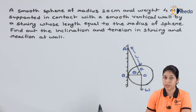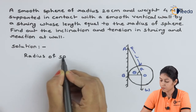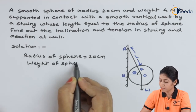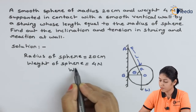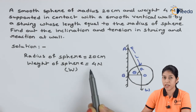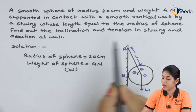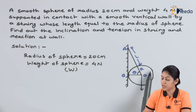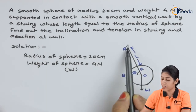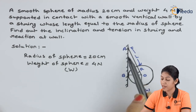We will write the given terms: the radius of the sphere is 20 centimeter and weight of the sphere is 4 Newton, denoted by W. This sphere is supported in contact with a smooth vertical wall. This particular sphere is supported by the smooth vertical wall, and this is a fixed surface represented by points A and B.